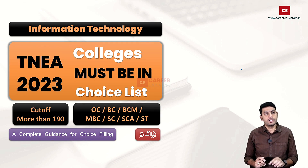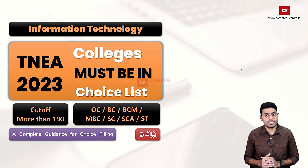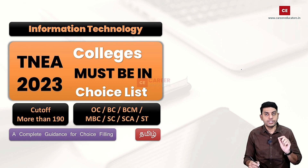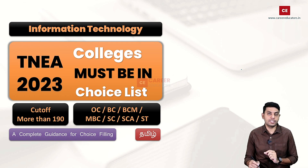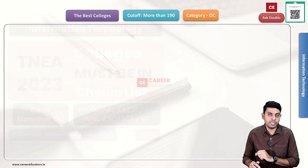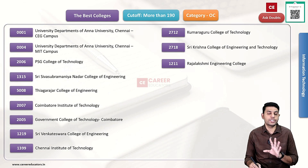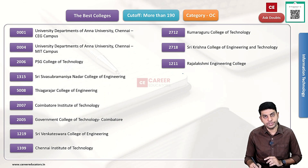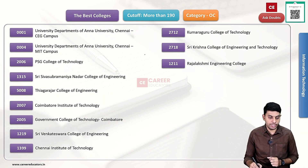In this video, we decide how to decide information technology. You will be able to fill in the 190 cutoff. The first category we have is OC category: 0001 University Campus CEG.